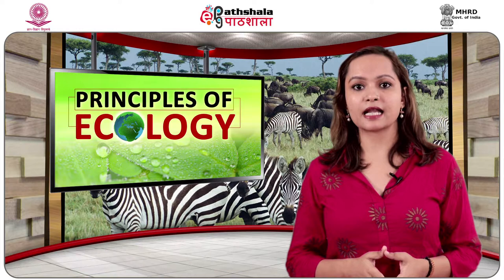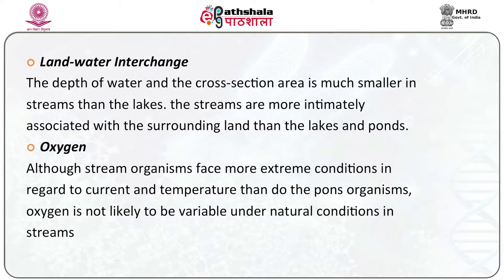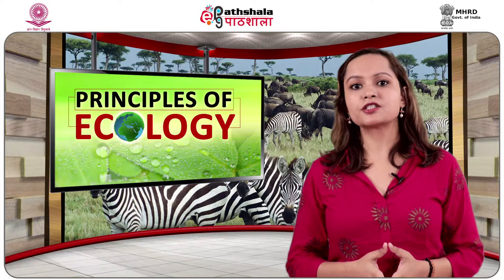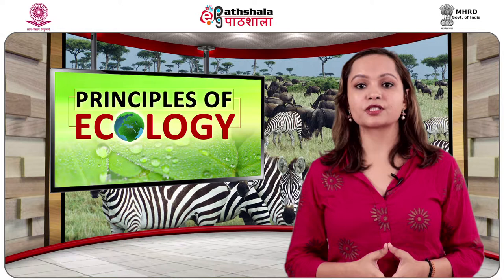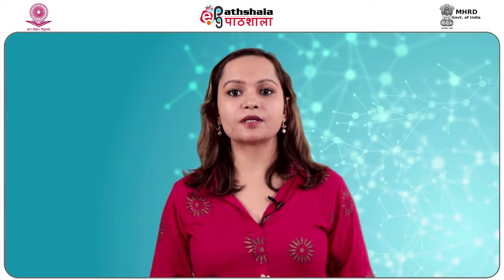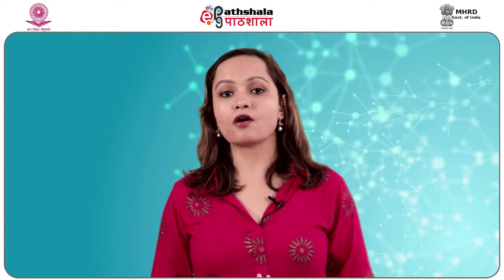Oxygen: although stream organisms face more extreme conditions regarding current and temperature than pond organisms, oxygen is not likely to be variable under natural conditions in streams. Due to small depth, large surface exposure to air and constant motion, streams generally contain an abundant supply of oxygen even when there are no green plants. Stream animals generally have a large tolerance and are especially sensitive to reduced oxygen. Therefore, stream communities are especially susceptible to and quickly modified by any type of organic pollution which reduces the oxygen supply. Therefore, streams are the first victim of urbanization.